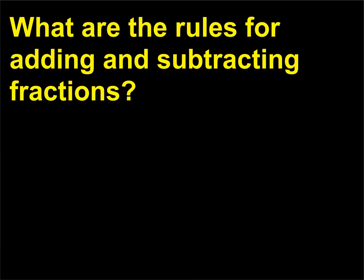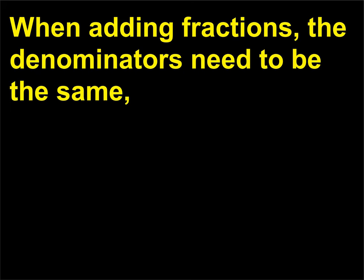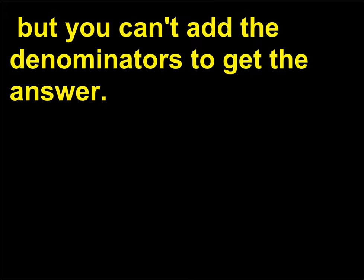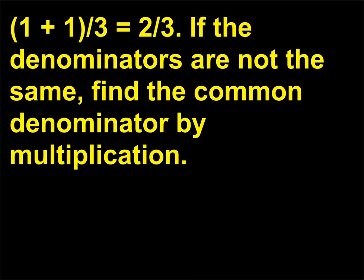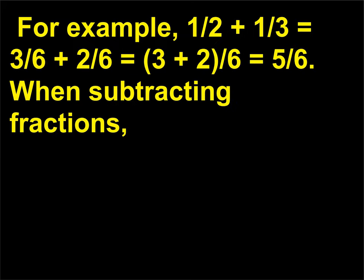What are the rules for adding and subtracting fractions? When adding fractions, the denominators need to be the same, but you can't add the denominators to get the answer. Simply put, if the denominators are already the same, the fractions are simple to add, such as 1/3 + 1/3 = (1+1)/3 = 2/3. If the denominators are not the same, find the common denominator by multiplication. For example, 1/2 + 1/3 = 3/6 + 2/6 = (3+2)/6 = 5/6.